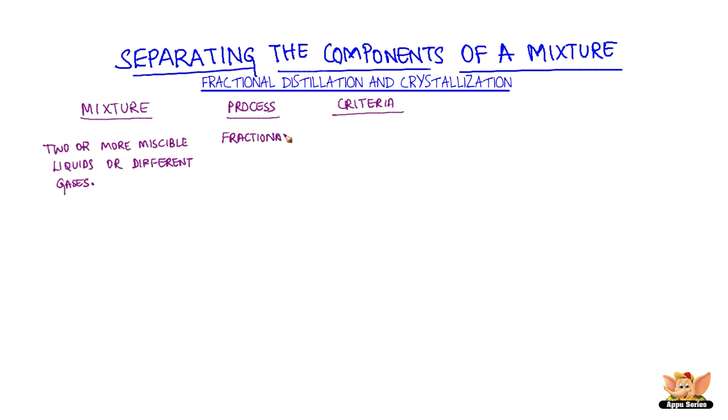This method can be used to separate different gases too. Fractional distillation is used for separation of a mixture of two or more miscible liquids having a difference in boiling points less than 25 Kelvin.